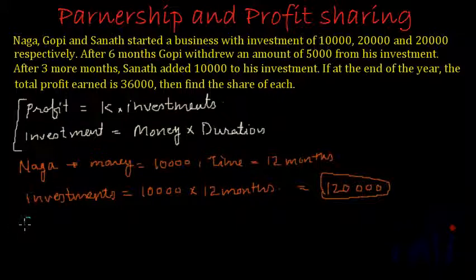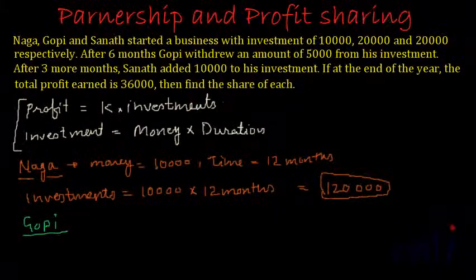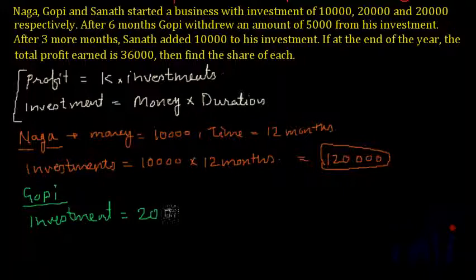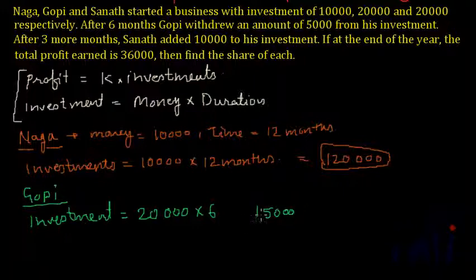Now if I talk about the second person, Gopi — Gopi is investing 20,000, but after six months he is withdrawing 5,000. So for the first six months his investment was 20,000, giving a first-stage investment of 20,000 multiplied by 6. After six months he withdraws 5,000, so the remaining amount still invested is 15,000, and this stays invested for the next six months.